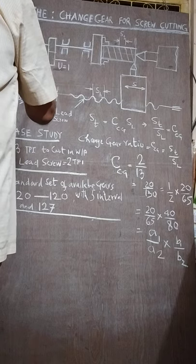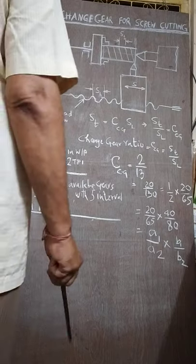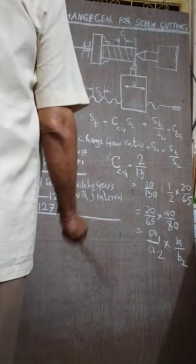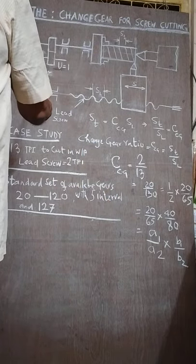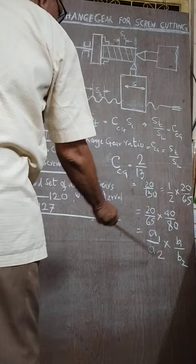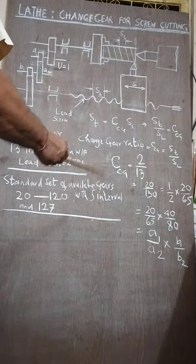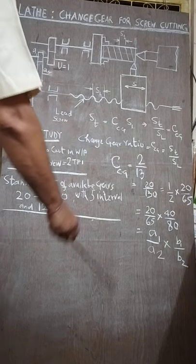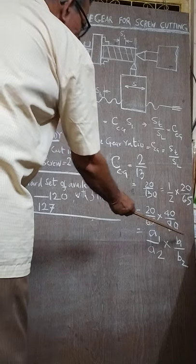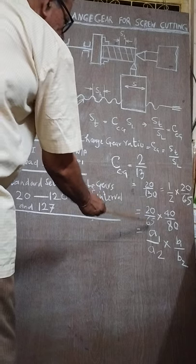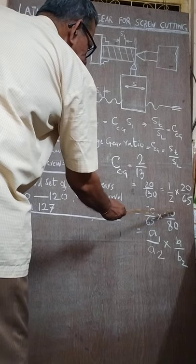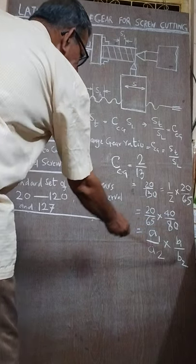So from a1 to a2, a2 by a1. So we can have a1 to a2 multiplied by b1 to b2. This is the conversion rate in the gearing arrangement. So a1 by a2, b1 by b2. A1 is 20, a2 is 65, b1 is 40, b2 is 80. So this is the arrangement here.